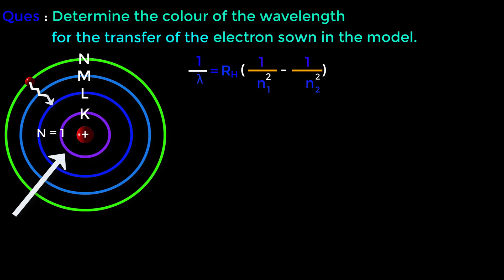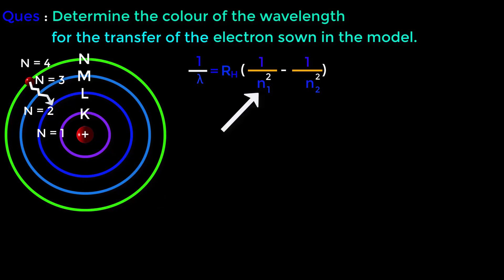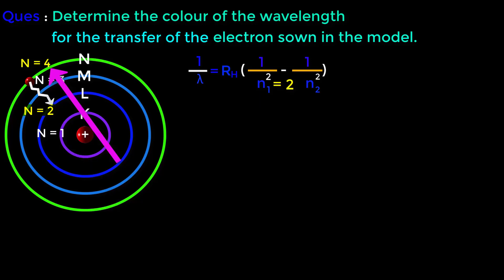This is the first orbit so N equals 1. This is the second orbit so N equals 2. This is the third orbit so N equals 3. This is the fourth orbit so N equals 4. Since the value of N1 must always be smaller than N2, N1 equals 2 and N2 equals 4.